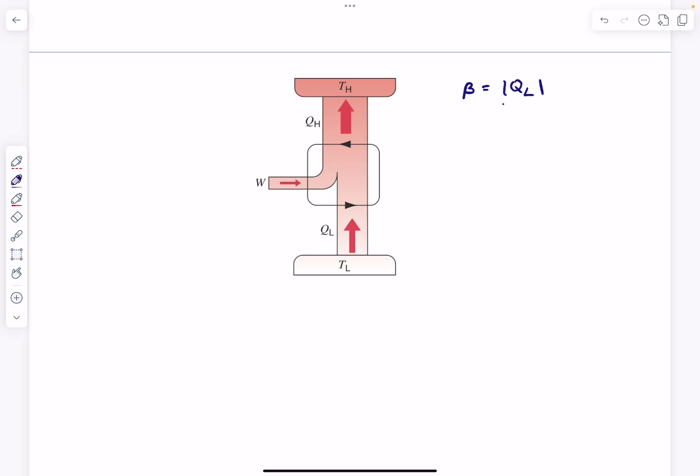What we want is to maximize the value of QL, which is the heat sucked out from the low temperature reservoir. We want to maximize that as much as possible divided by what we pay for, which is the work input that we need to supply. This is how we define the coefficient of performance of this refrigeration cycle.